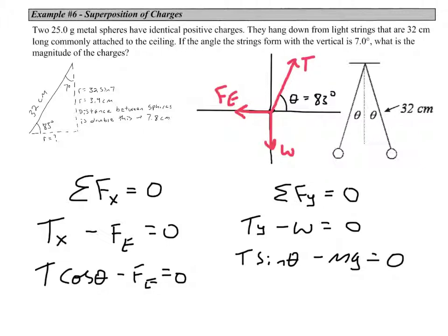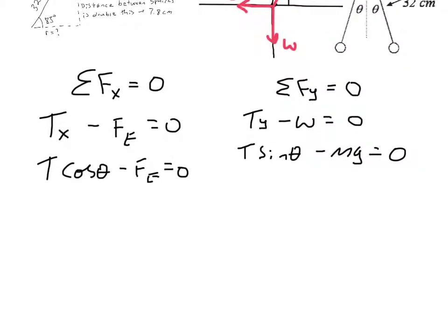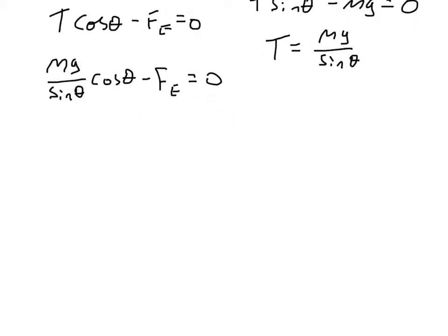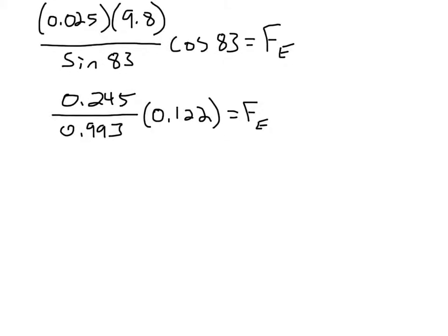We now have two equations with one unknown. We can solve for tension in the y-direction equation and substitute it into the x-direction equation, giving us mg over sine θ times cosine θ minus the electric force equals zero. Solving for the electric force, we end up with 0.030 newtons.